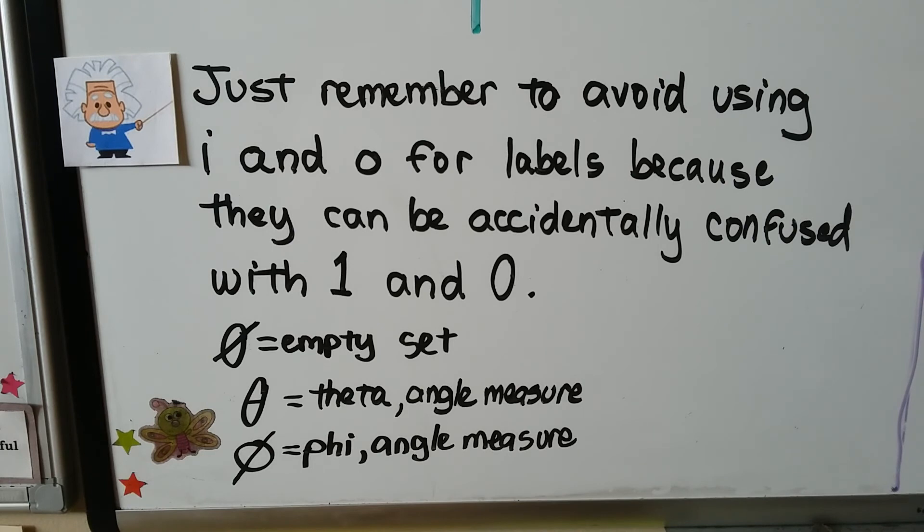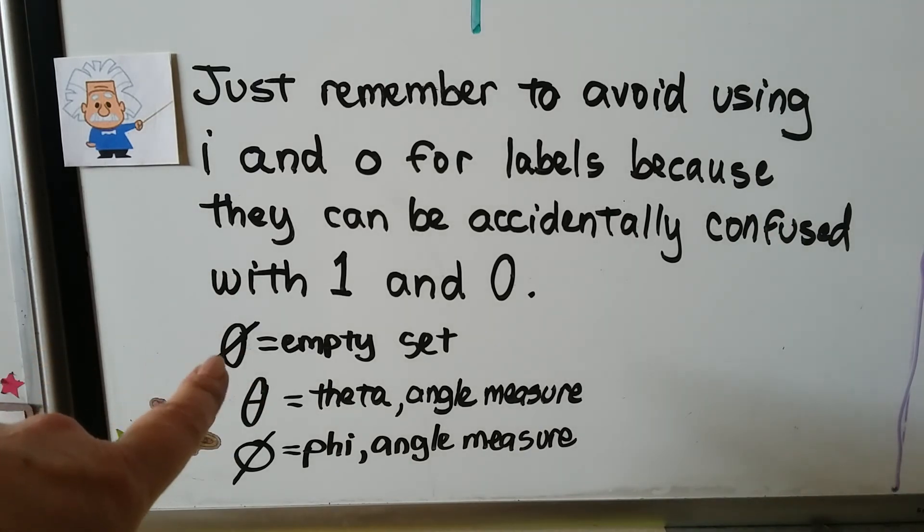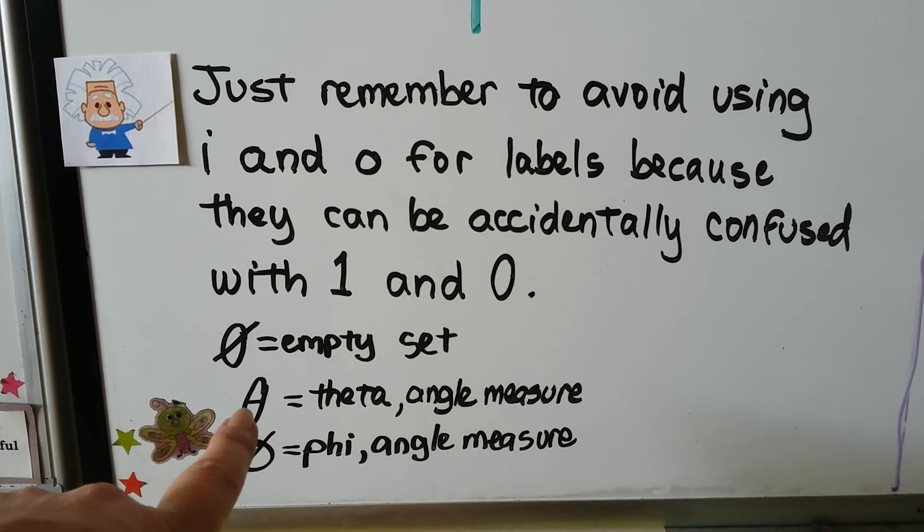Just remember to avoid using I and O for labels because they can be accidentally confused with 1 and 0. If someone's grading your paper and they can't make out what you've written, you could get it marked wrong when you had it right. I know some of you say, well, I can put a slash through my zero, but be careful because in math that means an empty set. It might be confused for theta or phi, which are angle measures. So make sure you write clearly and label clearly with capital letters.